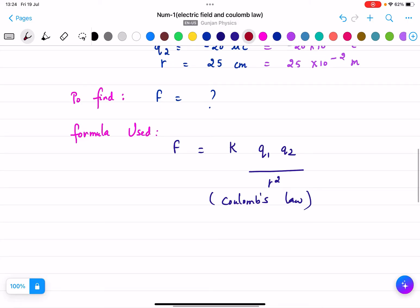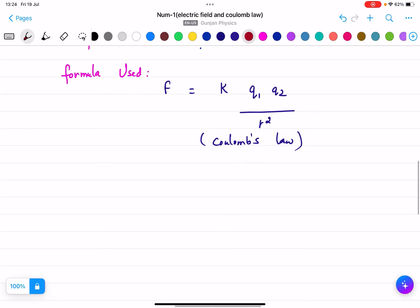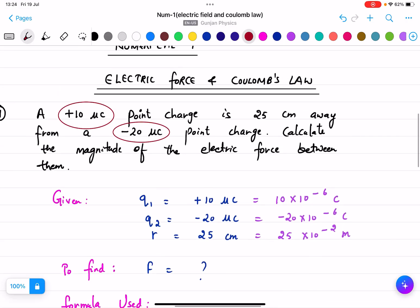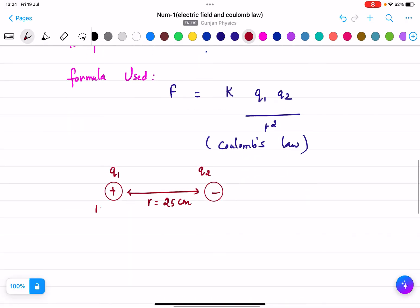We will do the pictorial first. Two point charges are given to us: first is q₁, another is q₂. There is a distance r = 25 centimeters. This one is plus, this one is minus. The values are 10 microcoulombs and -20 microcoulombs, and we need to find the force.